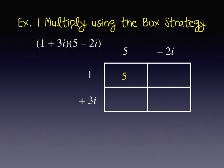1 times negative 2i to get negative 2i. 5 times 3i is 15i. Positive 3i times negative 2i is negative 6i squared.